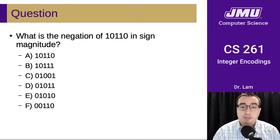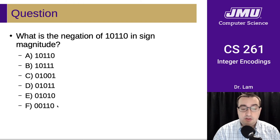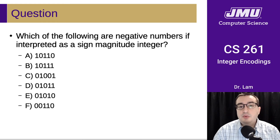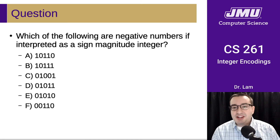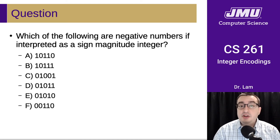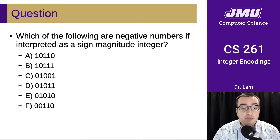In sign-magnitude, in order to negate a number we just flip the first bit — the sign bit — and change it from a 1 to a 0. Looking through the answer choices, the one that matches is F. For the next question: which of the following are negative numbers if interpreted as sign-magnitude integers? This should only take a few seconds — in sign-magnitude you can tell whether a number is negative simply by looking at the most significant bit. All numbers where the first bit is set are negative.